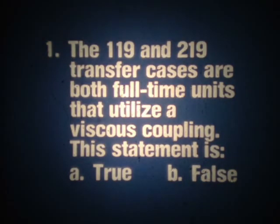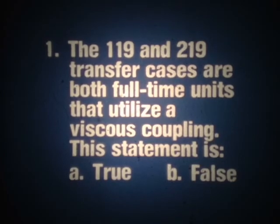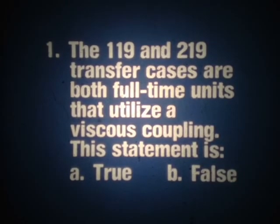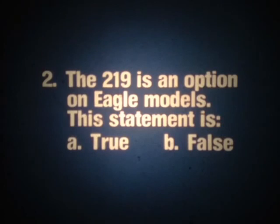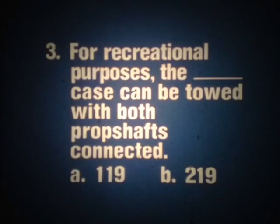Now that we've discussed these new transfer cases, see if you can answer a few questions. Number one: the 119 and 219 transfer cases are both full-time units that utilize a viscous coupling — is this statement true or false? Number two: the 219 is an option on Eagle models — true or false? Number three: for recreational purposes, vehicles equipped with the blank case can be towed with both prop shafts connected — is it A, the 119, or B, the 219?